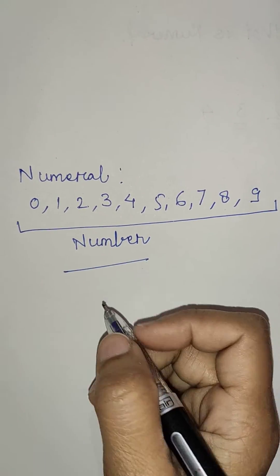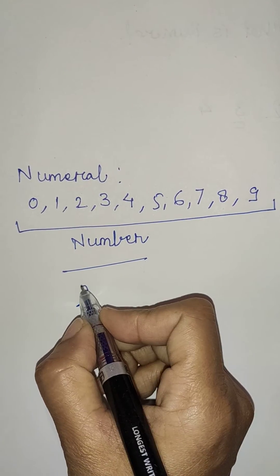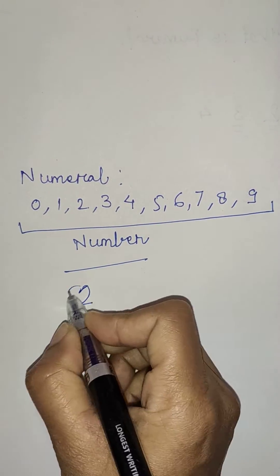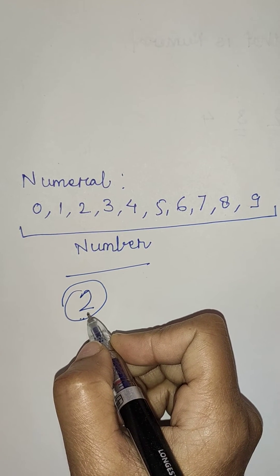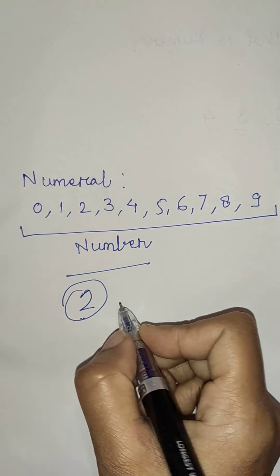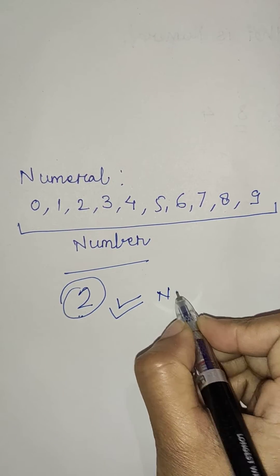When we recall a number like 2, we always make this figure. We never think about any other image. That's why this is called numeral.